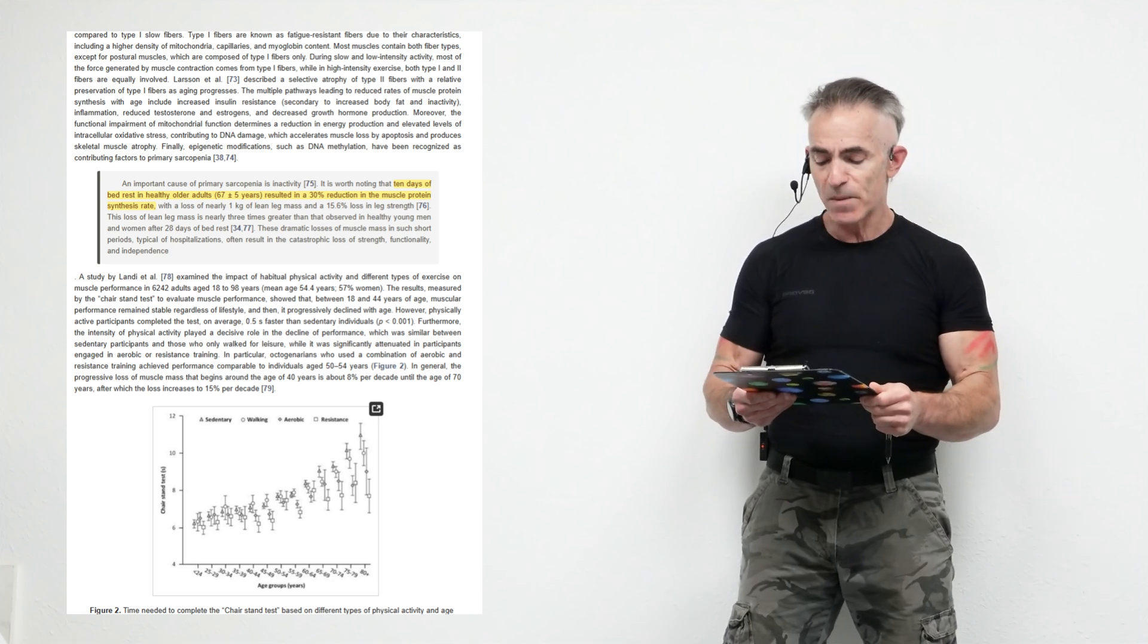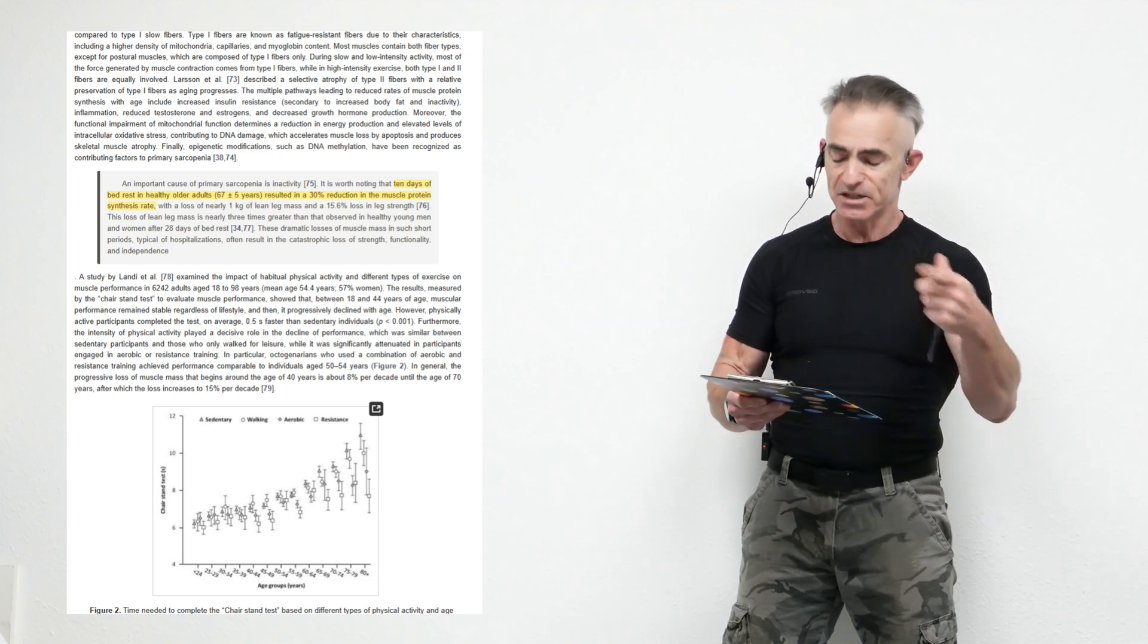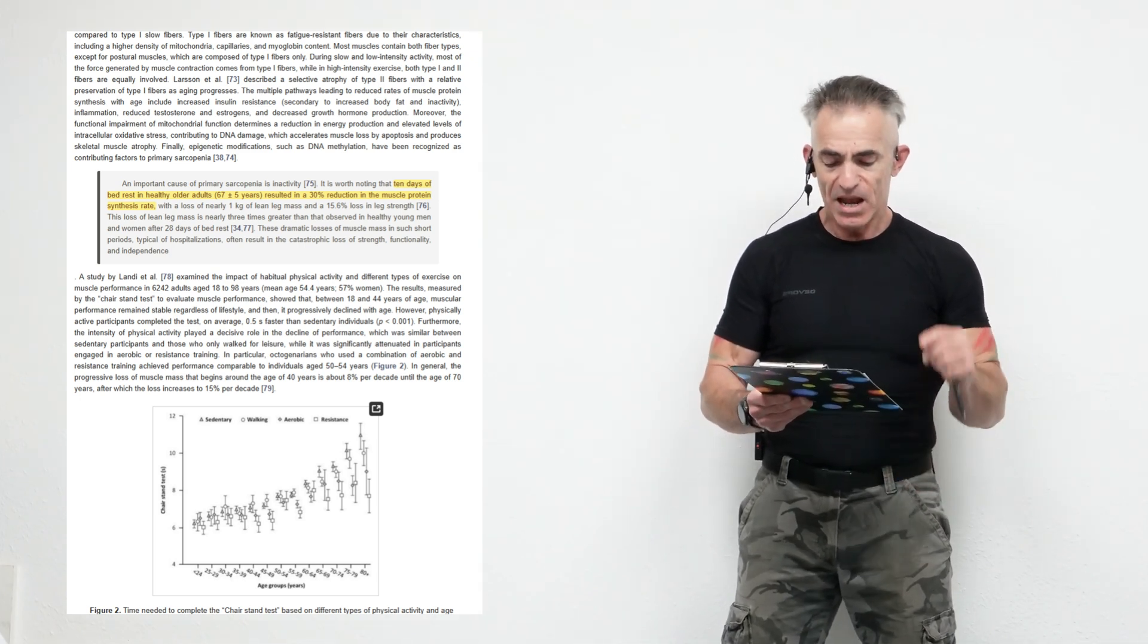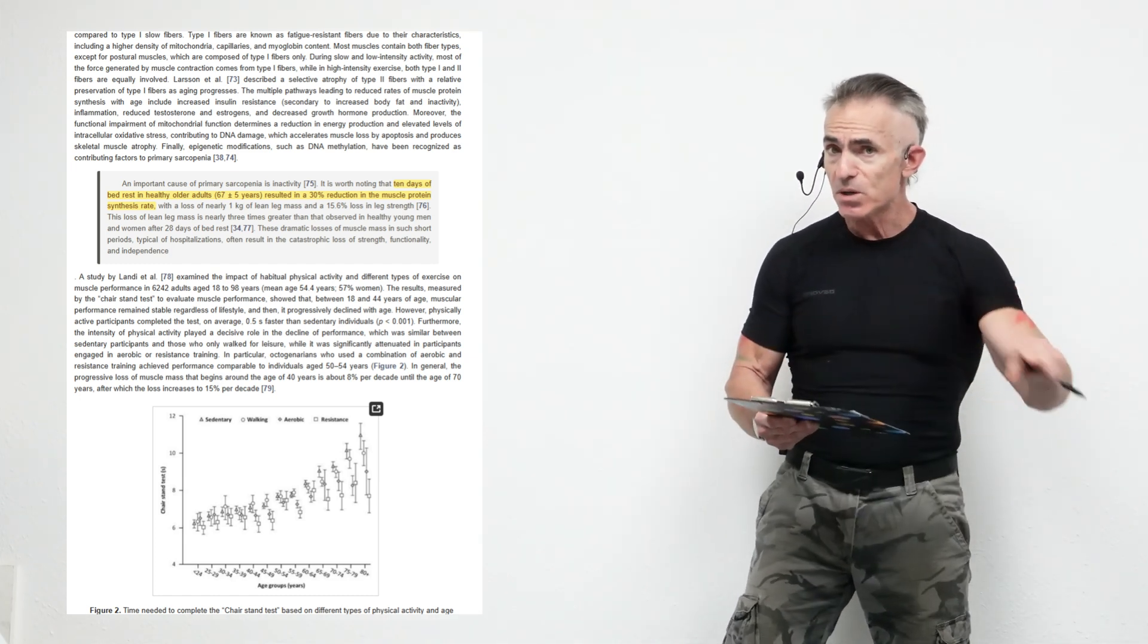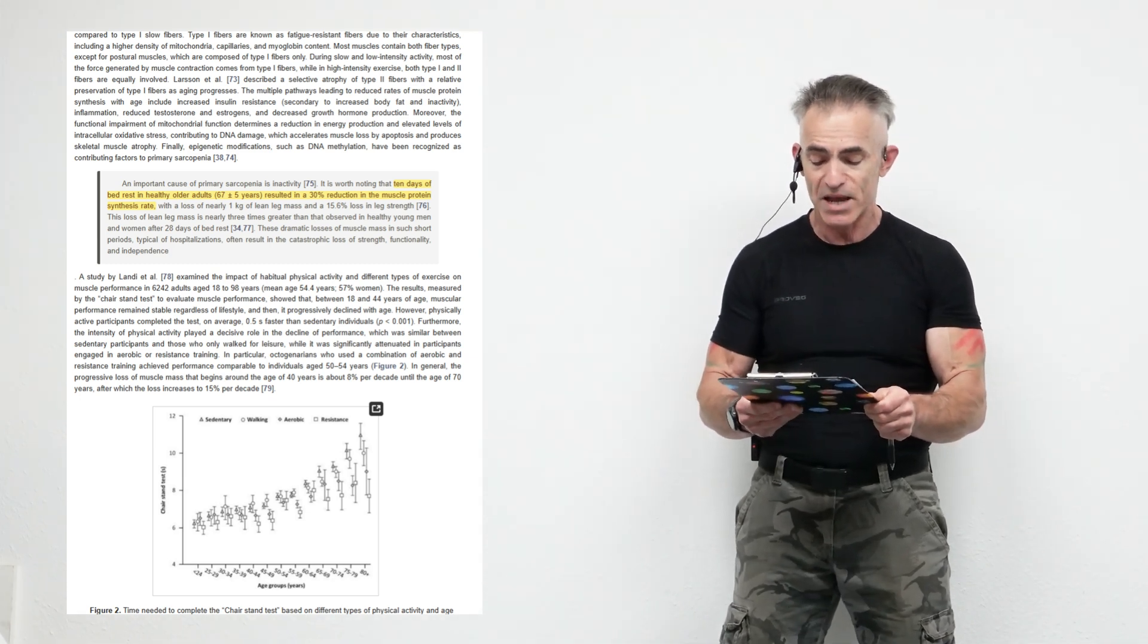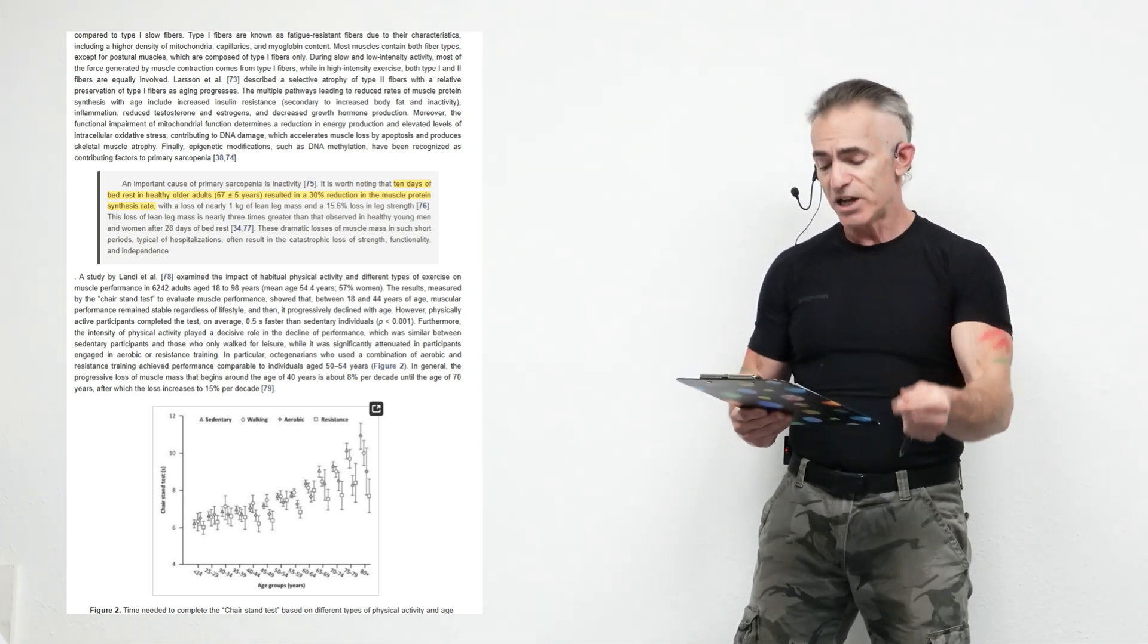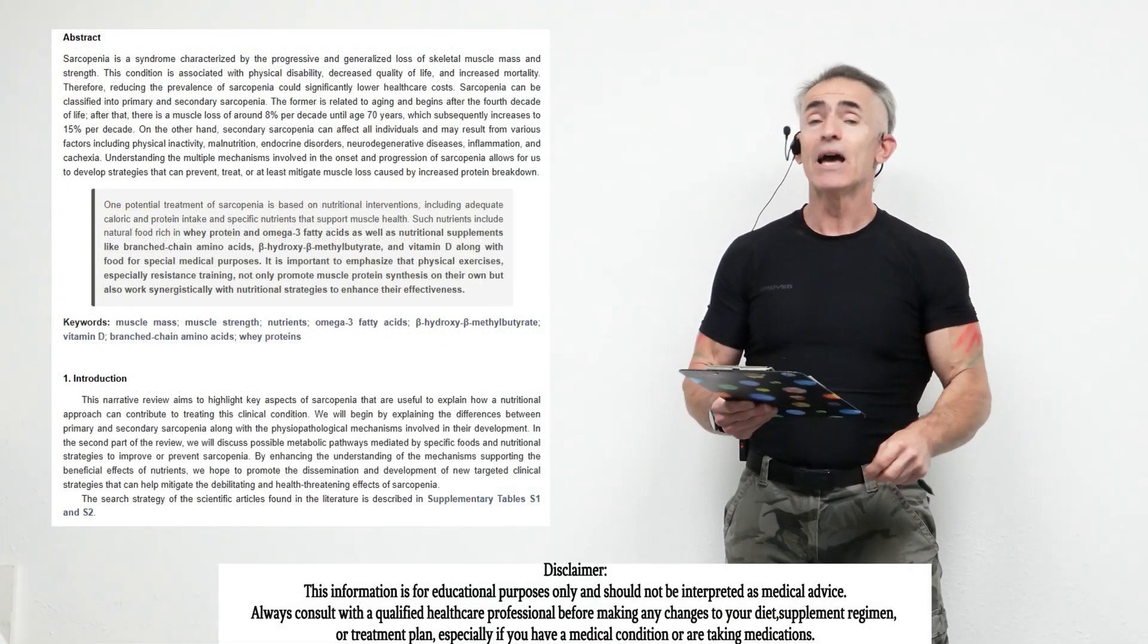Highlight number three: an important cause of primary sarcopenia is inactivity that is worth noting. At 10 days, just a mere 10 days of bed rest in healthy older adults, 65 plus or minus 5 years, resulted in a 30% reduction in muscle protein synthesis rate, with a loss of nearly 1 kilogram in lean leg mass and 15.6% loss in leg strength, just a mere 10 days. This loss of lean leg mass is nearly three times greater than that observed in healthy young men and women after 28 days of bed rest. These dramatic losses of muscle mass in such short periods, typical of hospitalizations, are resulting in catastrophic loss of strength, functionality, and independence. Henceforth, a narrative review looking for nutritional strategies to help mitigate that damaging effect.